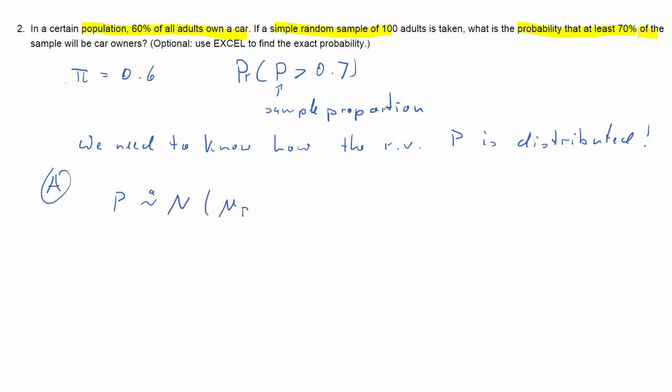We'll use two different approximations. First, let us state what we are after. We need the μ_P̂ and σ²_P̂, that's the expected value of the proportion and the variance of the proportion. Given the setup, we know they're related to the success probability of 0.6 in this way. The expected value is just 0.6. The variance is π times (1 minus π) divided by n, and that's 0.0024.